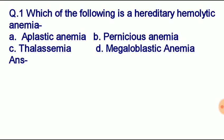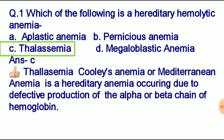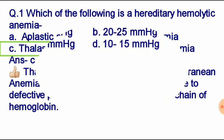Question number one: which of the following is hereditary hemolytic anemia? Option A: aplastic anemia. Option B: pernicious anemia. Option C: thalassemia. Option D: megaloblastic anemia. Answer is option C, thalassemia — also known as Cooley's anemia or Mediterranean anemia. Thalassemia is a hereditary anemia occurring due to defective production of the alpha or beta chain of hemoglobin.